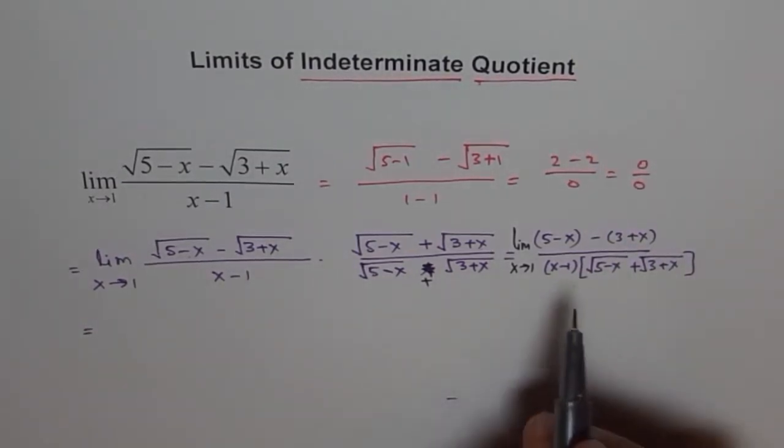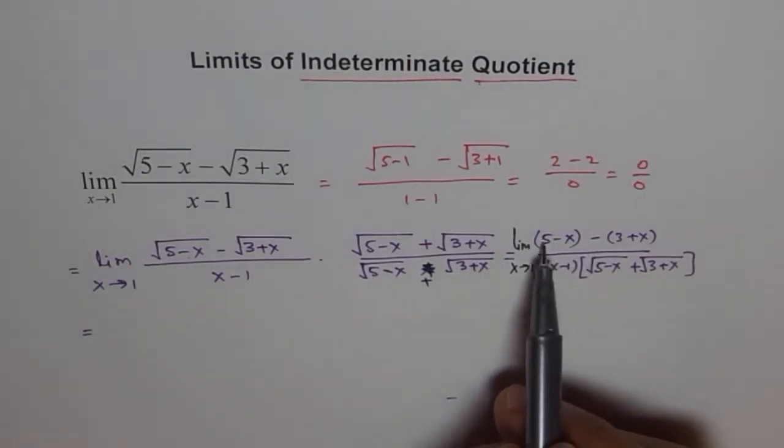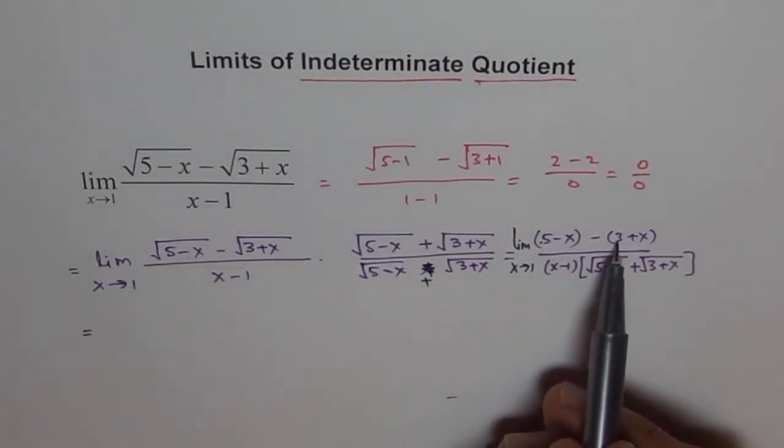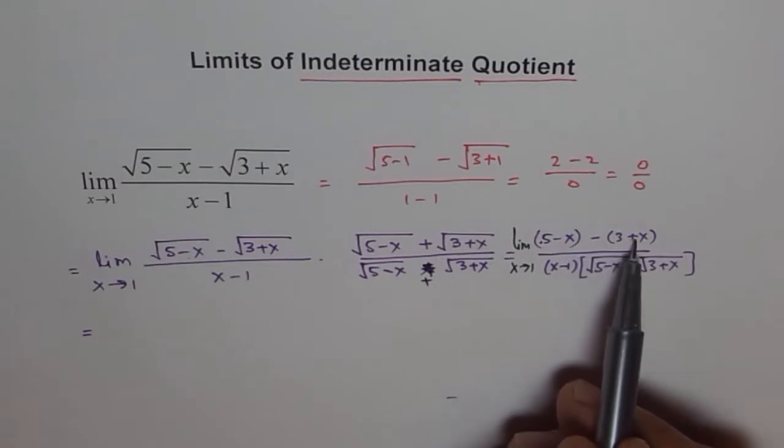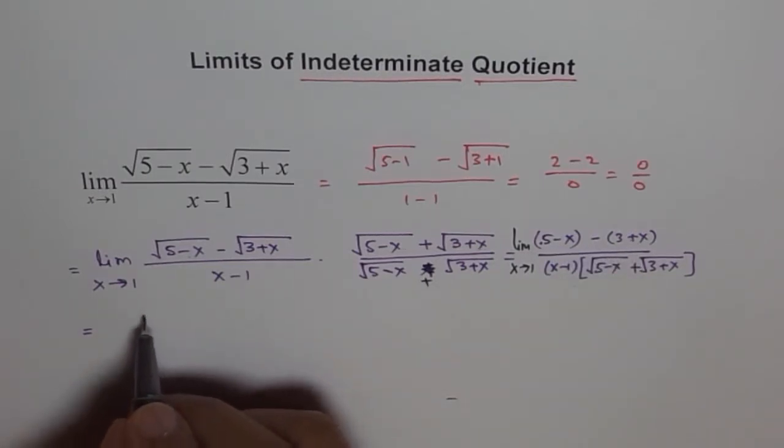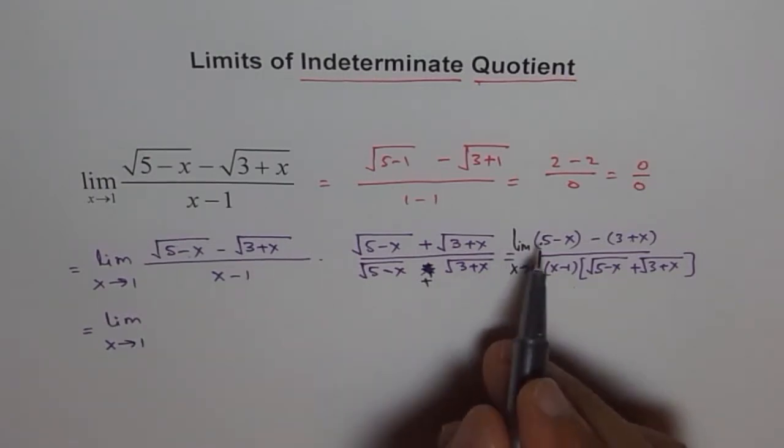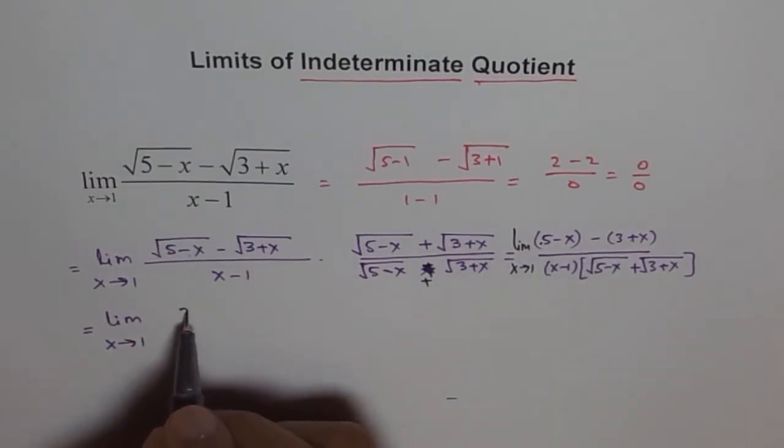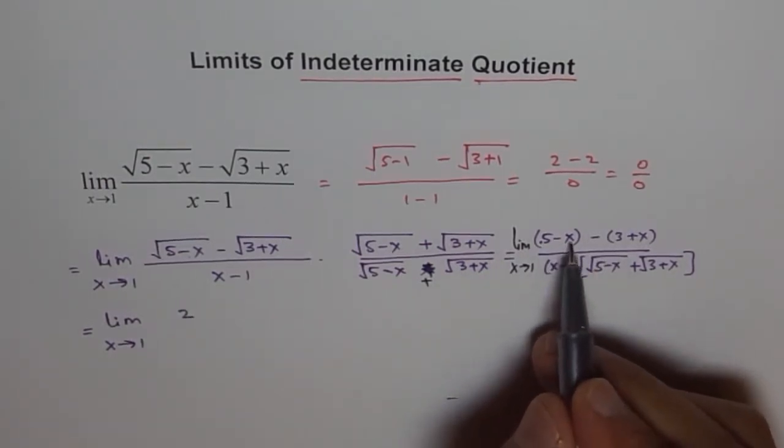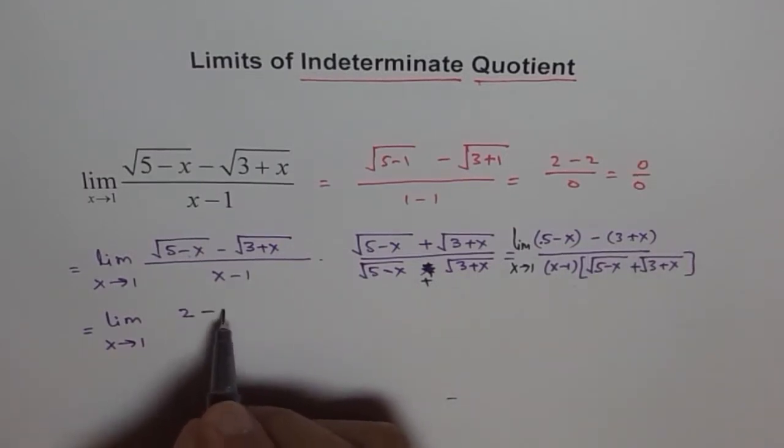Now this could be written as, let's open this bracket. 5 minus 3 is 2, and minus x minus x is minus 2x. So we get limit x approaches 1 and 5 minus 3 is 2 and minus x minus x is minus 2x.